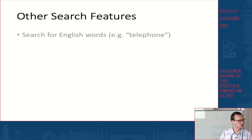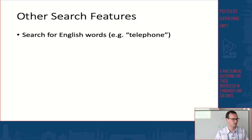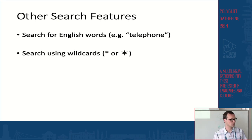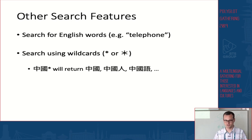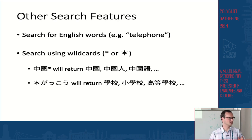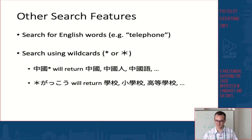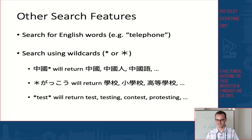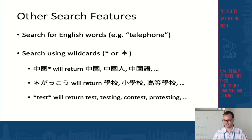There are a couple of other search features as well. You can search for English words — for example, 'telephone' — and get all words that have 'telephone' in their definition. You can also use wildcards: searching '中*' gives compound words like '中国人,' '中国語,' etc. Searching '*句' gives words ending with that character. And searching '*test*' gives results containing 'test' anywhere — testing, contest, protesting, and so on.